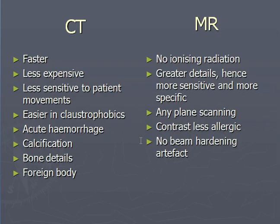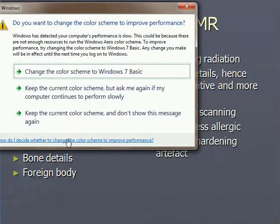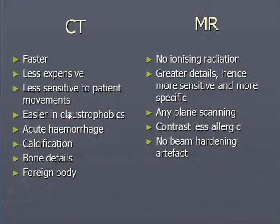Now there is a comparison between CT and MR. CT is faster, less expensive, less sensitive to patient movement, easier in claustrophobics, and is preferred for acute hemorrhage, calcification, bone details, and foreign bodies. These are the things which can be very well seen in CT as compared to MR.